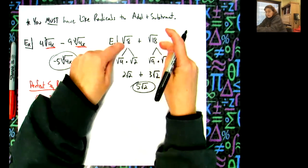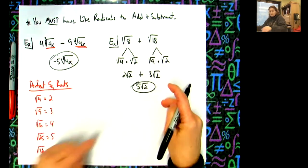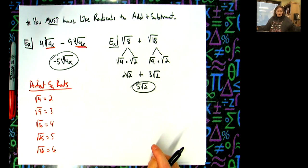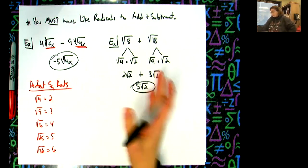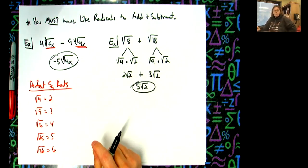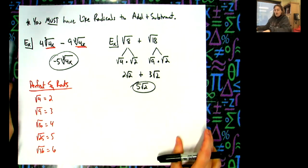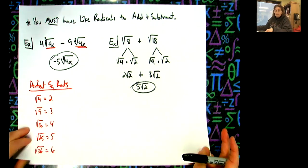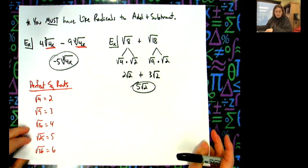Obviously the bigger these numbers are, the more challenging the problem. That's not my goal right now - my goal is to make sure you understand that when you add or subtract radicals, they have to match. Questions up to this point? Are we good?